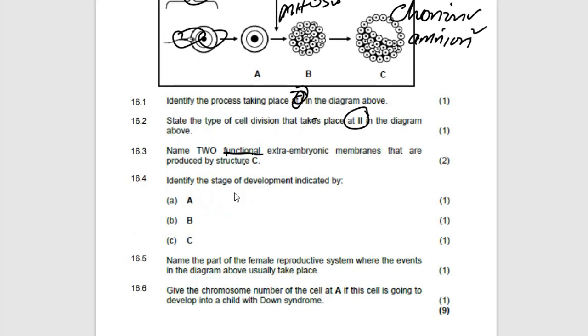Name the part of the female reproductive system where the events in the diagram above usually take place. Where do we find this? They occur in the fallopian tube. Because fertilization will take place in the fallopian tube.